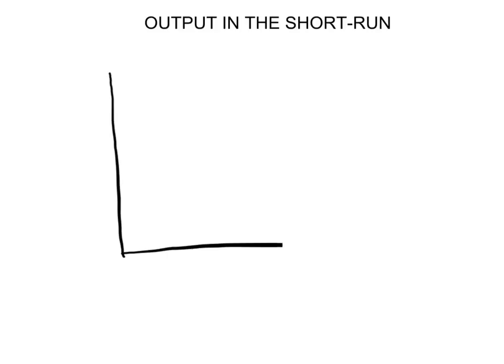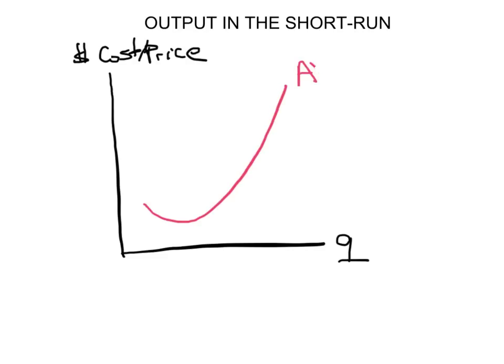If we have a diagram with quantity on the horizontal axis and dollars, cost, or price on the vertical axis, then what we're saying is that in the short run, it's really the average variable cost that's going to determine whether the firm operates or not.